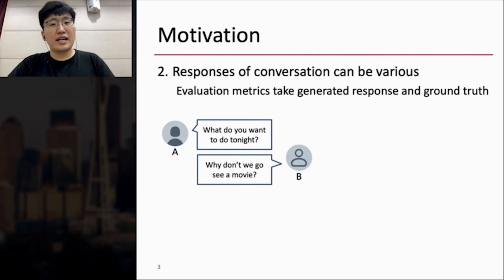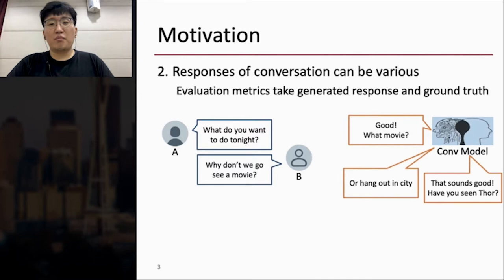Second motivation is that responses of conversation can be various, but existing evaluation metrics take generated response and ground truth only. I will explain it with an example. In this conversation, person A said, what do you want to do tonight? And B responded, why don't we go see a movie?